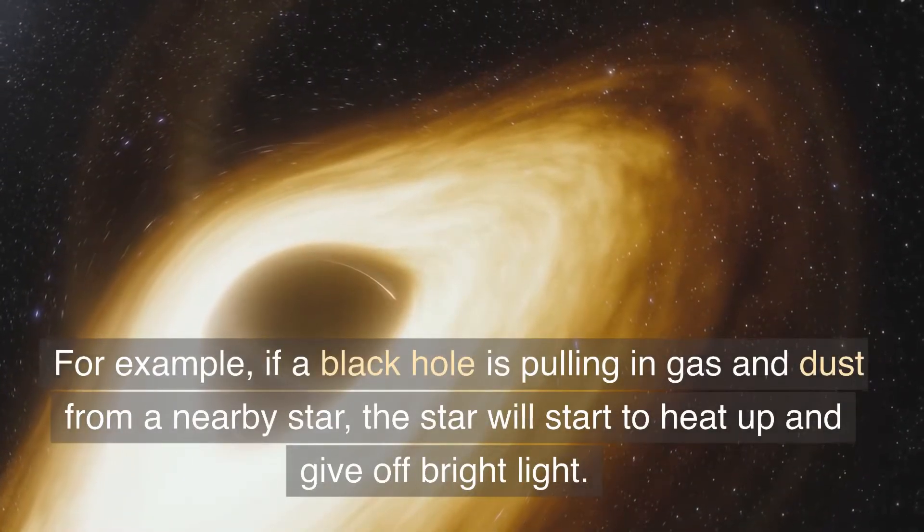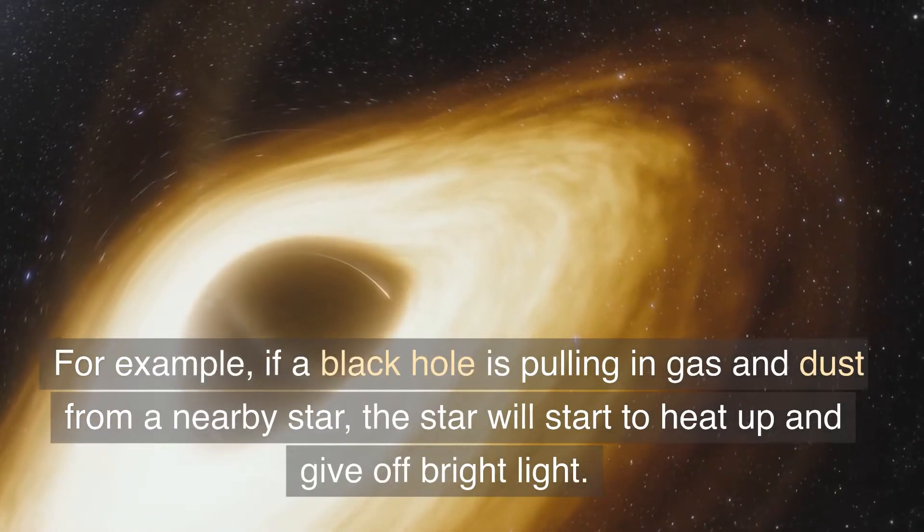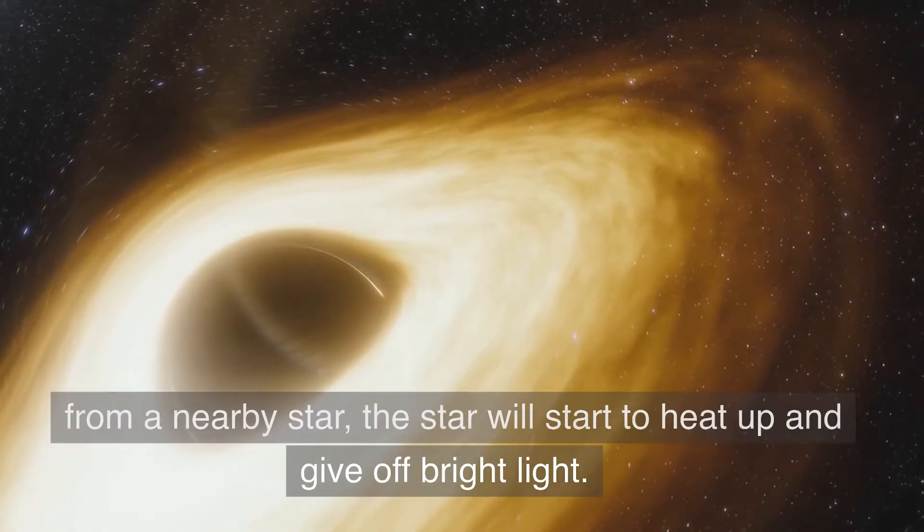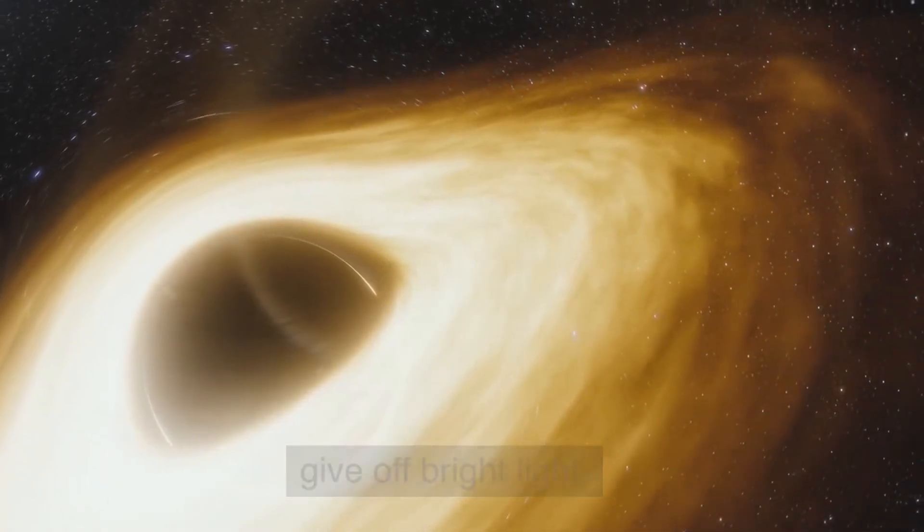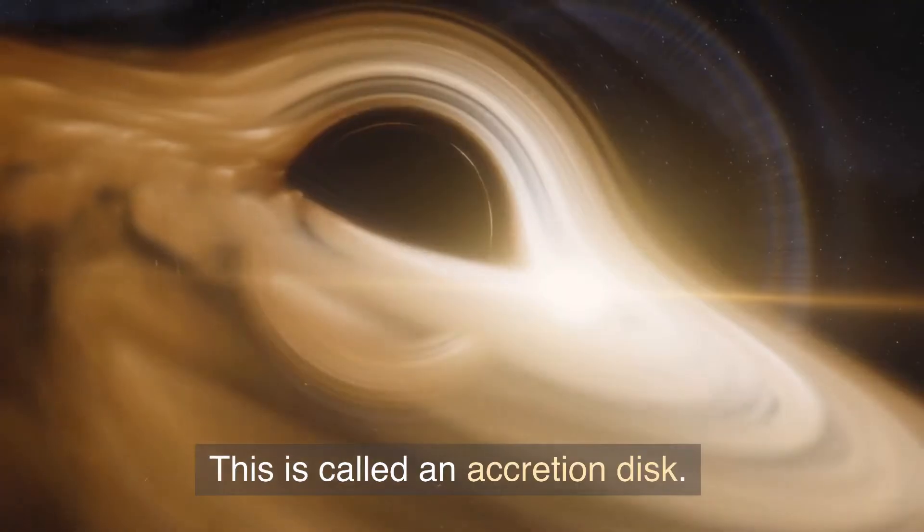For example, if a black hole is pulling in gas and dust from a nearby star, the star will start to heat up and give off bright light. This is called an accretion disk.